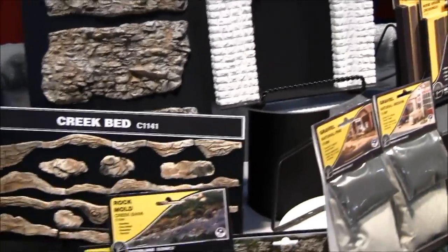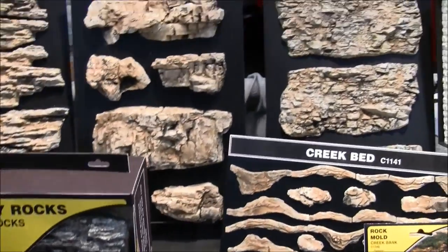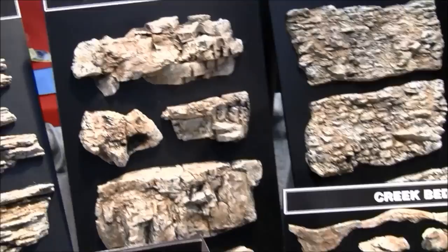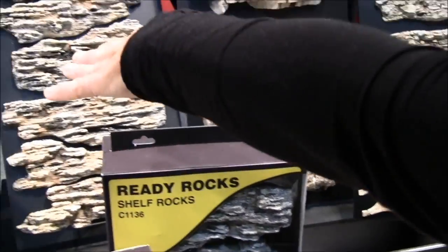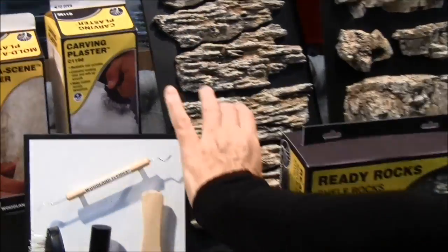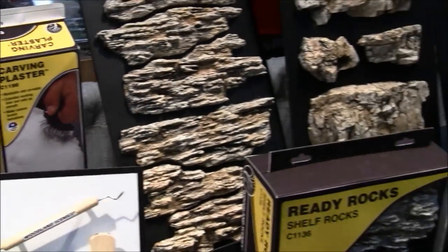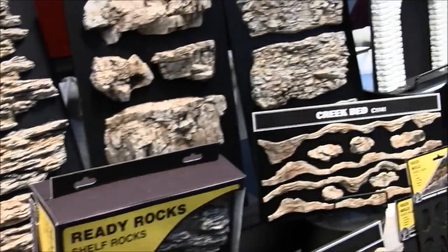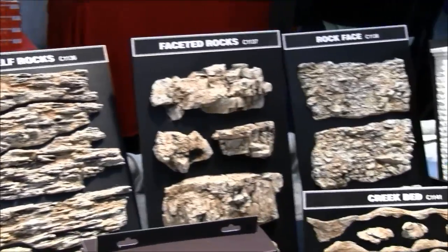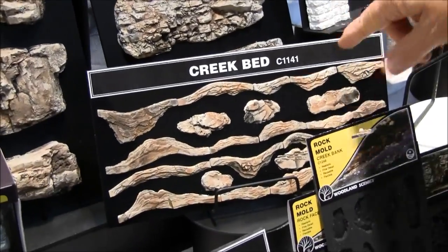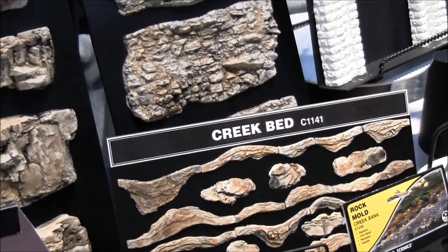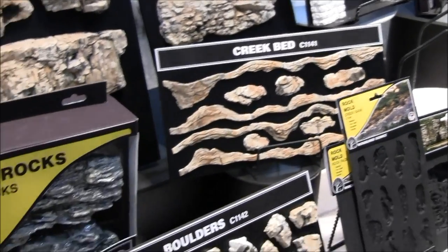These are our new Ready Rocks. The Ready Rocks are precast plastered and they're hand painted so every rock you buy is unique. The shelf rocks, the rock face, you can see that those are actually cast so that that section fits to that section like a jigsaw puzzle so that you can create a solid wall or you can place them individually. This is our new creek bed so you can go ahead and form a creek bed with the different pieces before you pour your realistic water.